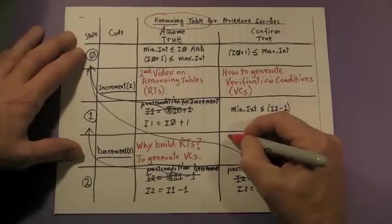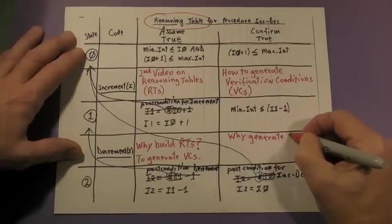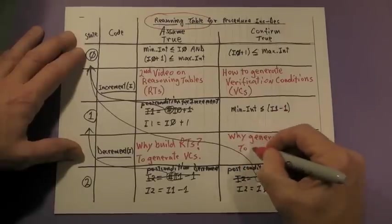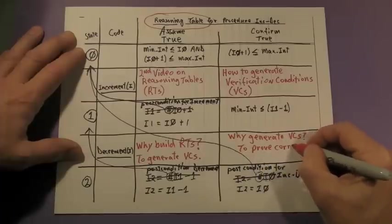Which begs the question, why generate VCs? We're going to use these VCs to prove the correctness of the operation in this reasoning table.